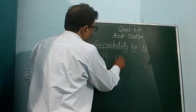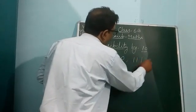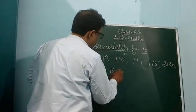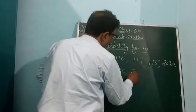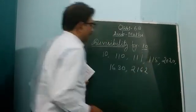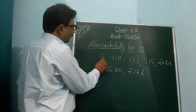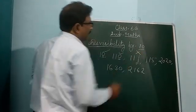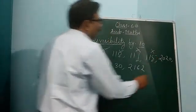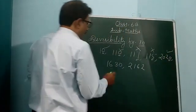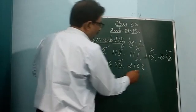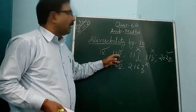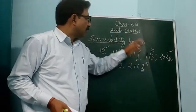You can check: 10, 110, 111, 150, 2020, 1600, 30, 2162. You see these numbers. As the last digit is 0, it means divisible by 10. Last digit 1 — not divisible by 10. Last digit 5 — not divisible by 10. Last digit 0 — divisible by 10. Last digit 0 — divisible by 10. Last digit 2 — not divisible by 10.